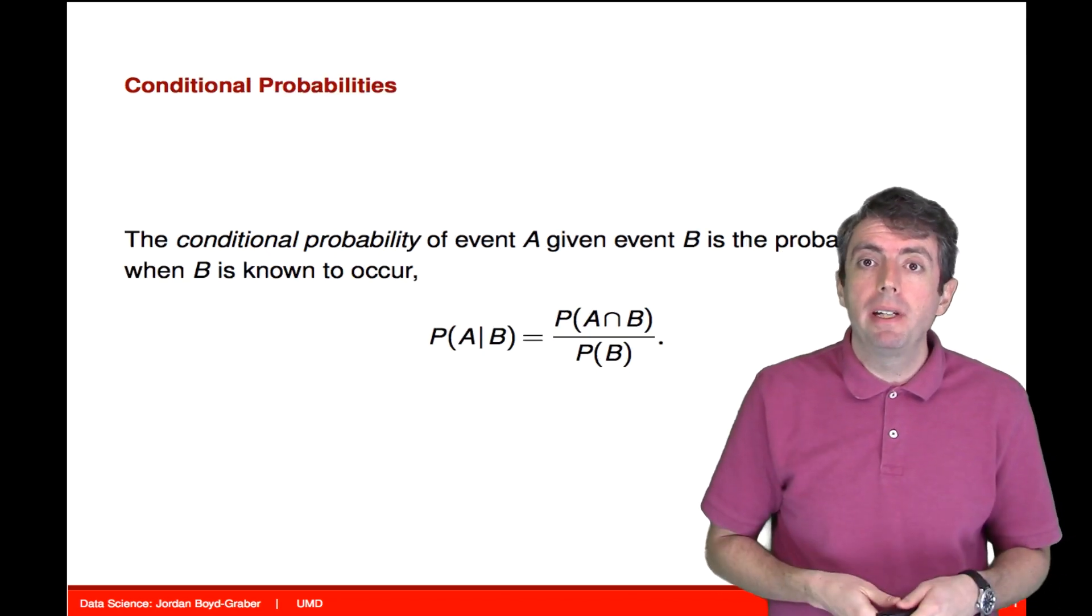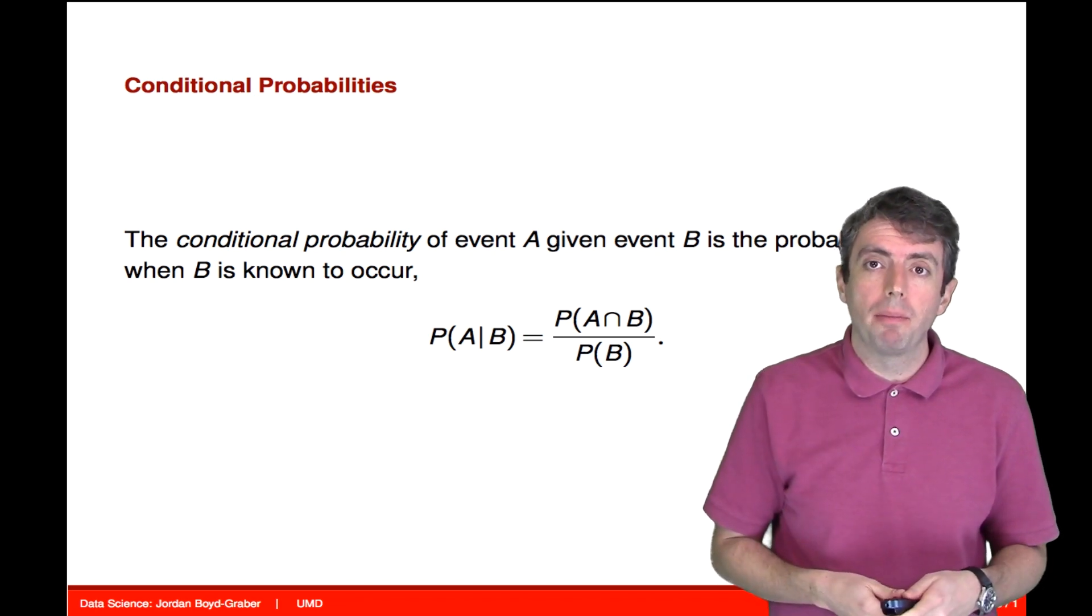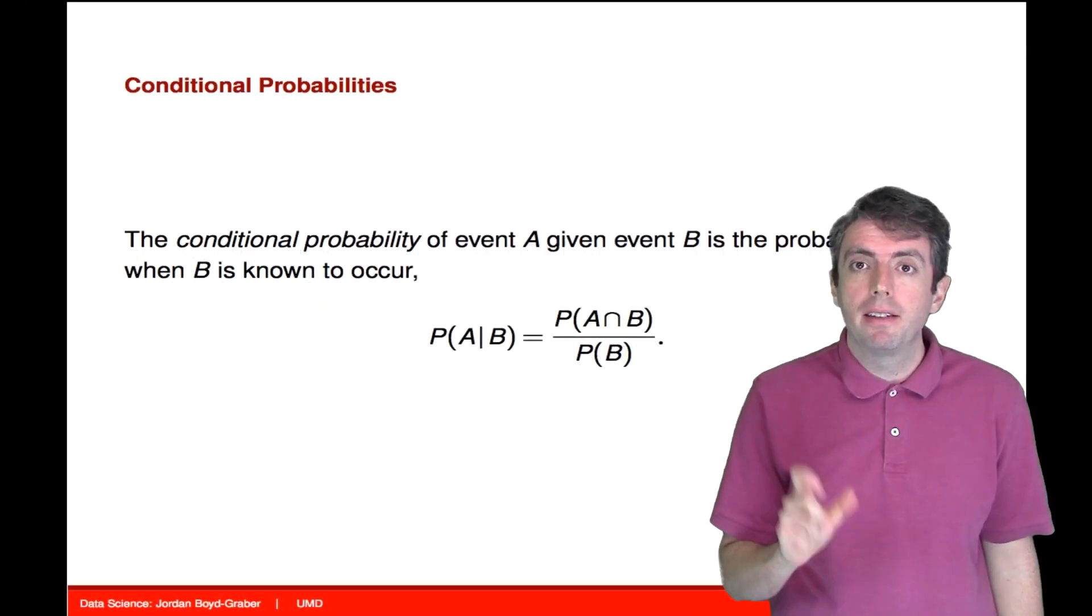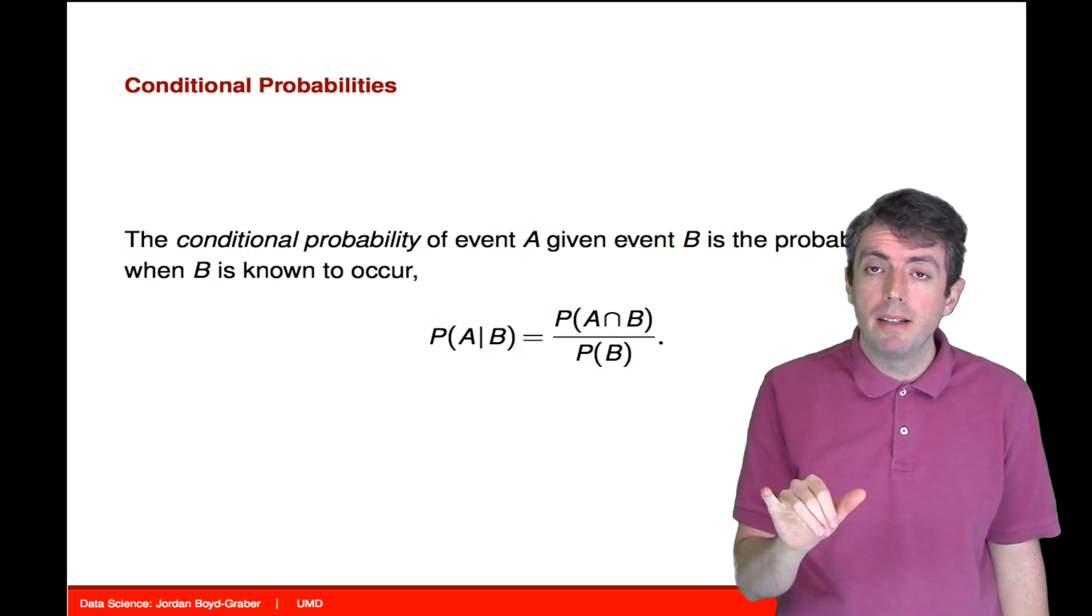So let's first begin with the definition of conditional probability. The conditional probability is where we're taking some joint probability space and we're going to restrict it to the cases where we know that a particular outcome has occurred. Mathematically, this is equivalent to taking two events A and B, and then dividing it by the probability of B.